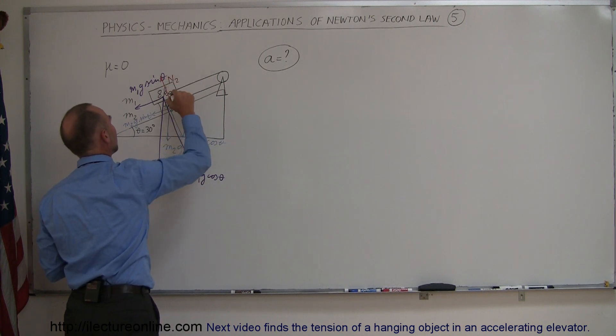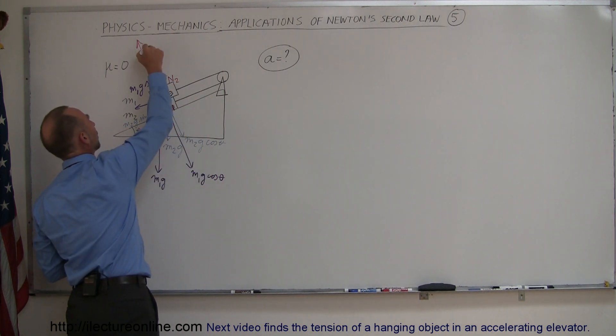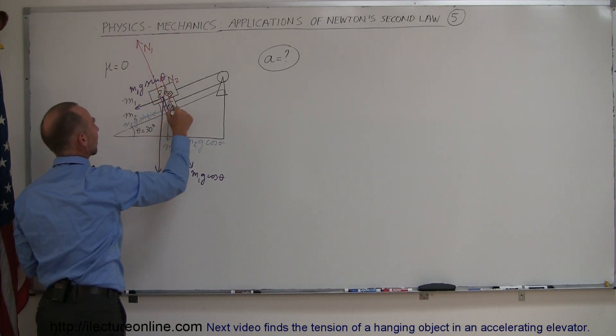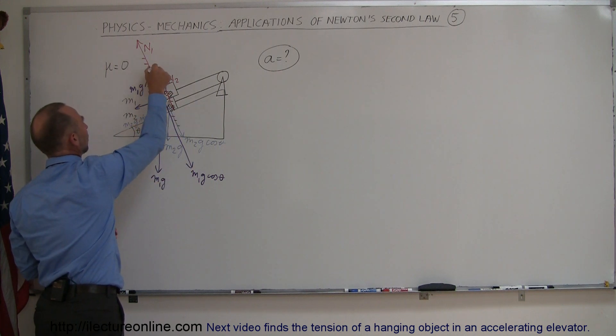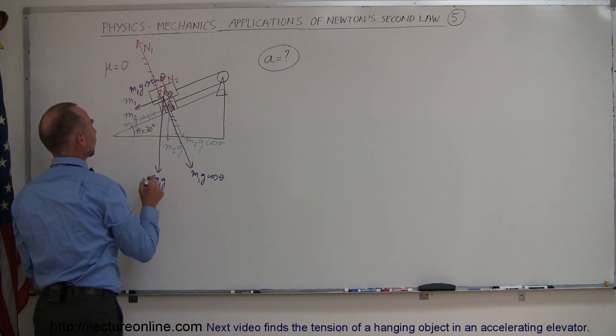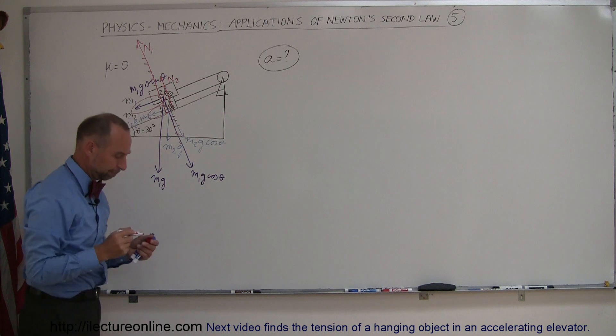There is a normal force or the reactionary force the m2g cosine theta, so let's call this n2, and here's the reactionary force to the m1g cosine theta component, so let's call that n1. And notice that this will cancel out this force and this will cancel out this force, and that leaves us of course with just this force right here and this force right here acting on the whole system.